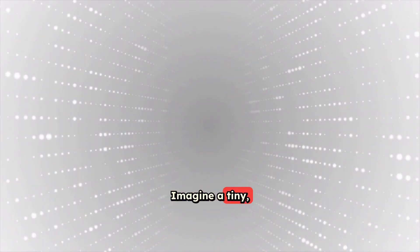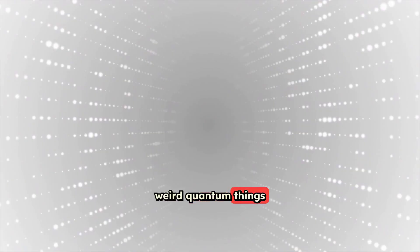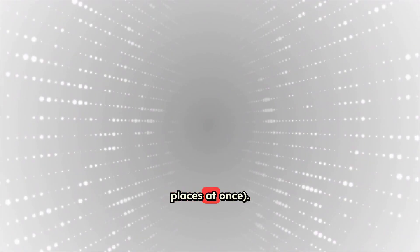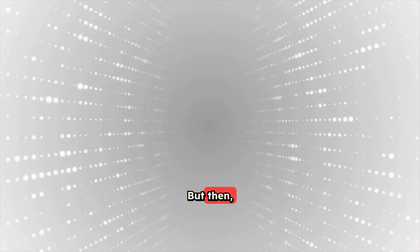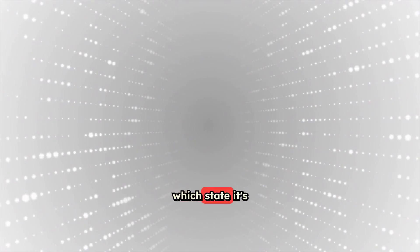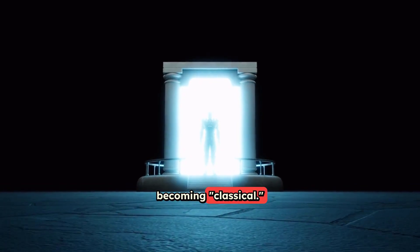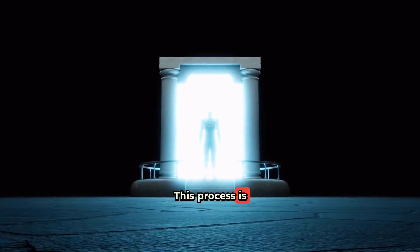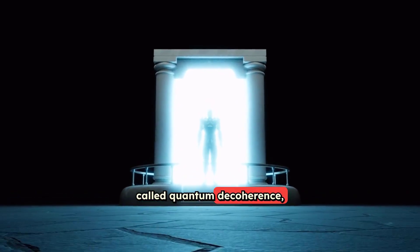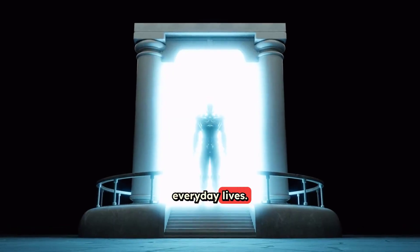Imagine a tiny, super-delicate quantum system that's doing amazing, weird quantum things, like being in two places at once. But then, if it bumps into anything in its environment, it suddenly decides which state it's in, and loses its quantum magic, becoming classical. This process is called quantum decoherence, and it's why we don't see quantum weirdness in our everyday lives.